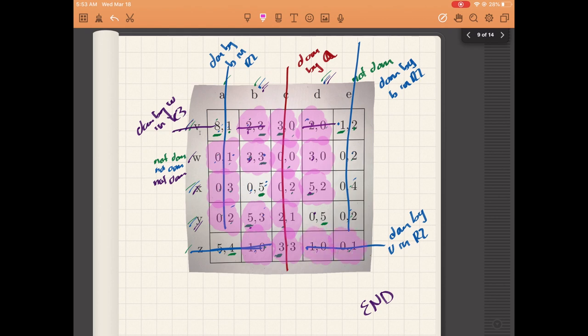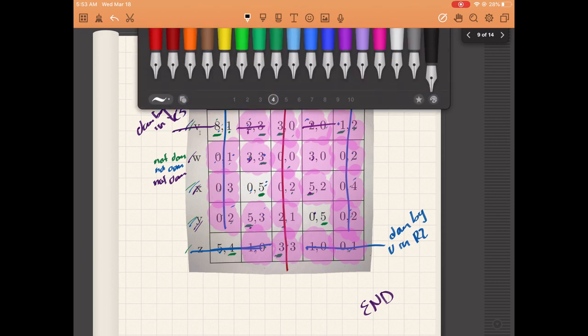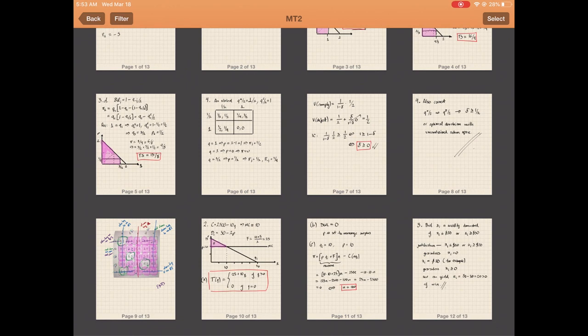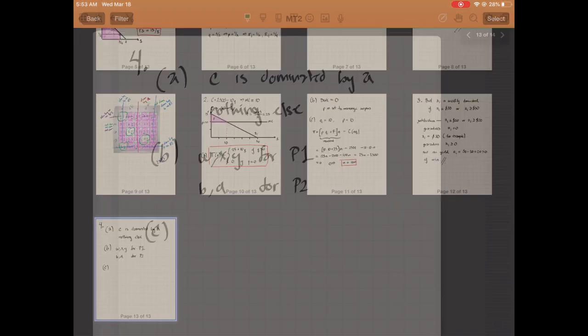We see that only four boxes survived—those correspond to the undominated outcomes, which are xb, za, and yb. That's it for the exam.